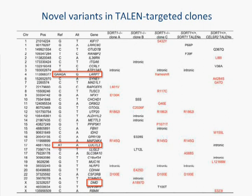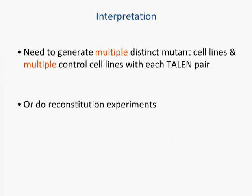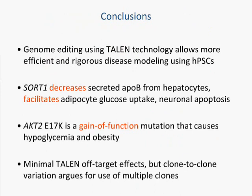To summarize our interpretation of these results: you would need to generate multiple distinct mutant cell lines and multiple control cell lines with each TALEN pair. As we showed, across three clones you never really had three mutations in the dystrophin gene — it was a scattering of somewhat random mutations as a result of single nucleotide variation. Or you can do the much more rigorous experiment in the knockout case of reconstituting the particular gene or protein you're interested in. As a final conclusion, genome editing using TALEN technology allows more efficient and rigorous disease modeling using human pluripotent stem cells. We found that sortilin decreases secreted ApoB from hepatocytes and facilitates adipocyte glucose uptake and neuronal apoptosis. AKT2 E17K is a gain-of-function mutation that causes hypoglycemia and obesity. We also discovered that the TALENs we looked at had minimal off-target effects, but there was significant clone-to-clone variation, which argues for the use of multiple clones.